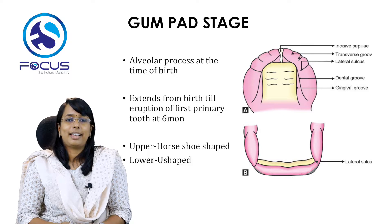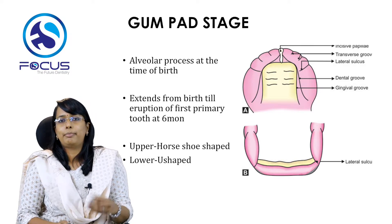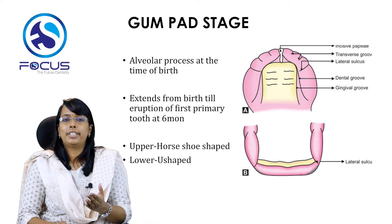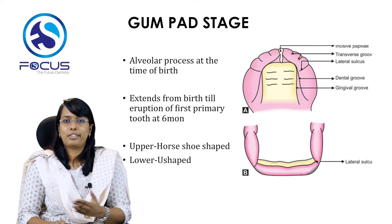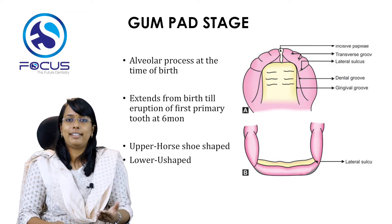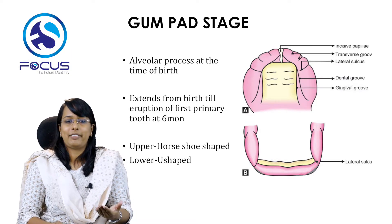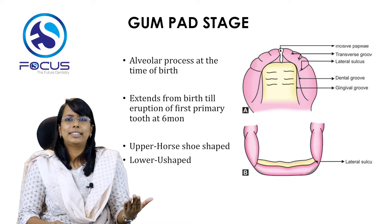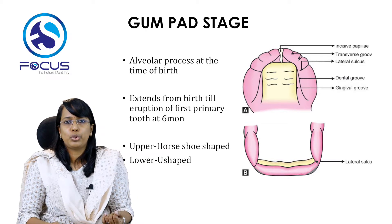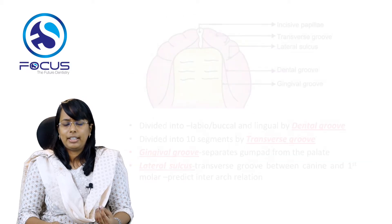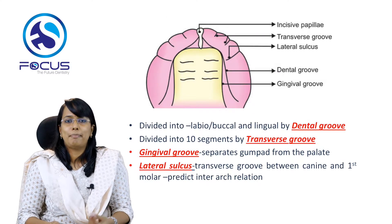The gum pad stage refers to the alveolar process at the time of birth. It extends from birth until the eruption of the first primary tooth, which is approximately six months of age when the central incisors erupt into the oral cavity. Regarding the shape of the gum pads: the upper gum pad is horseshoe-shaped and the lower gum pad is U-shaped.